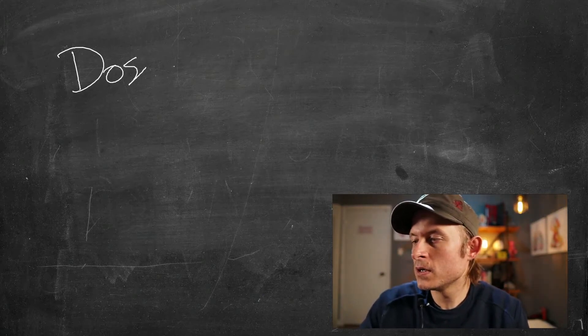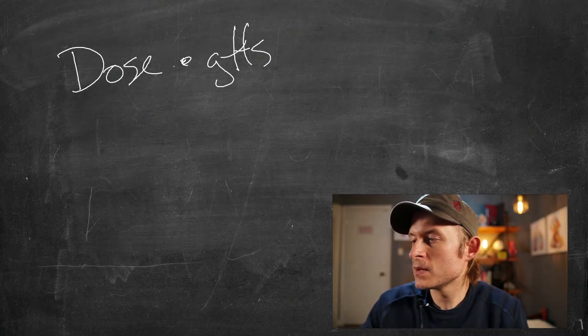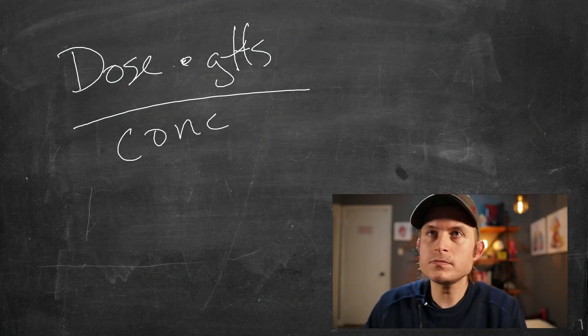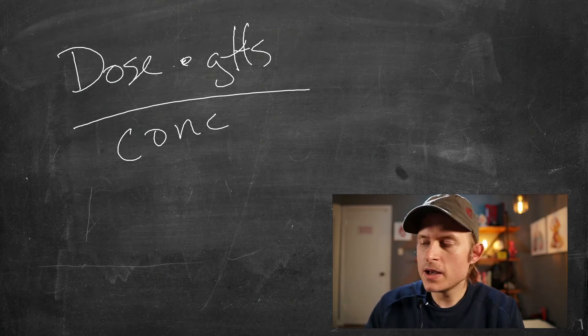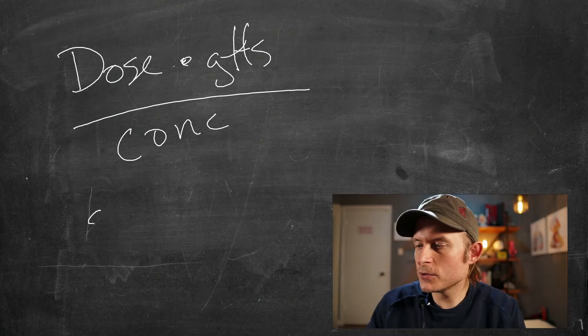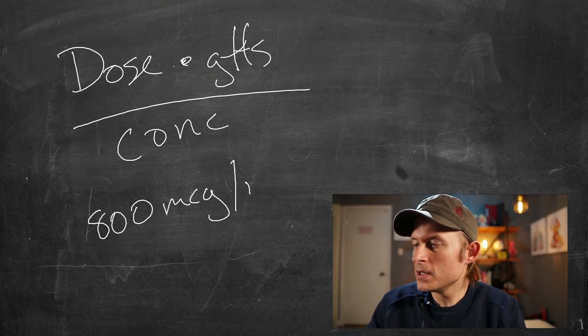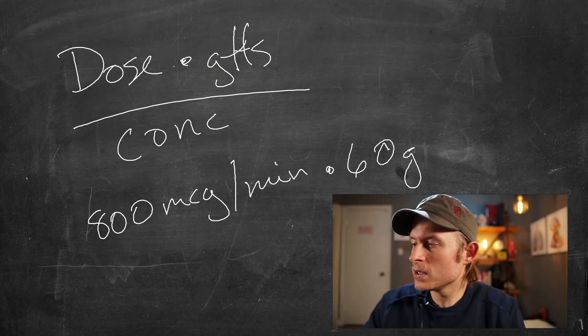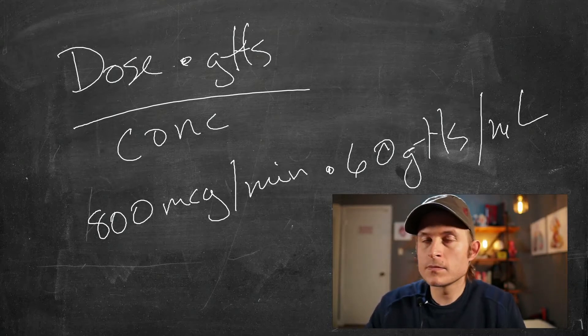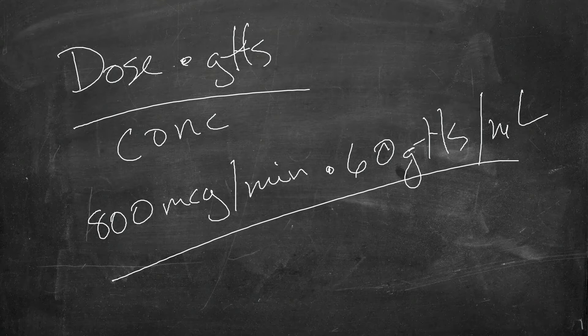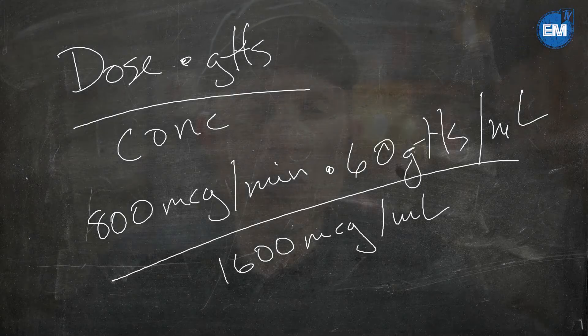The equation that the dopamine clock is used with is the dose times drip set over concentration equation. So what this means here is you have a dose of medication that you're going to administer per minute. So let's say we've chosen our dopamine drip, we're going to give 800 micrograms per minute times a 60 drop set over a concentration of 1600 micrograms per ml of your dopamine. Now, all that the concentration refers to is the amount of medication, the dose per ml of fluid. So that's your concentration.